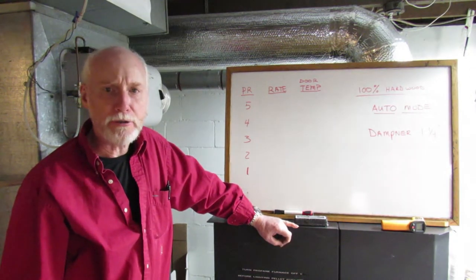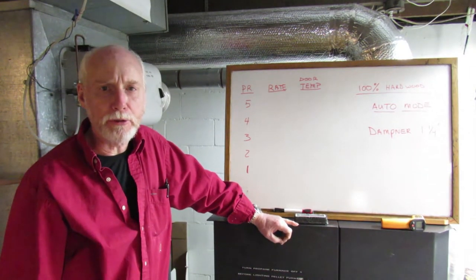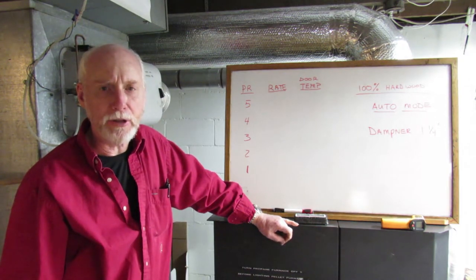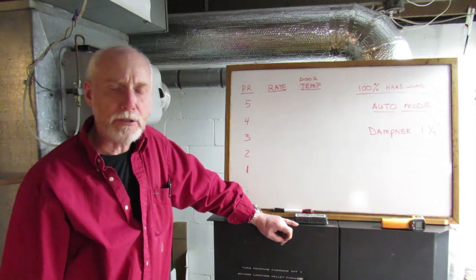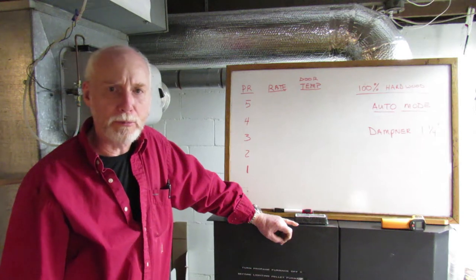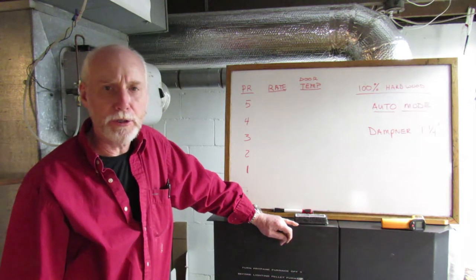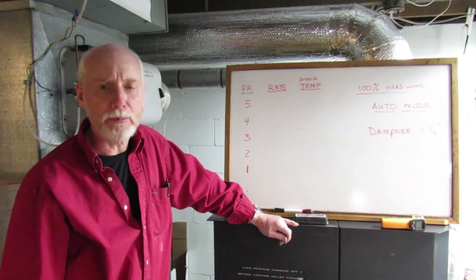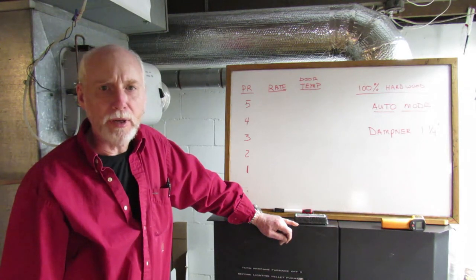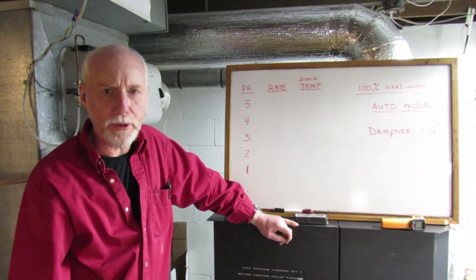I found over last year and this year that the stove runs much smoother if you eliminate, in other words don't use, setting number 5 for your high temp. And the reason for this is that your stops are set according to your computer board from your PR1 setting and your PR5 setting. So when you're running a high temp on PR5, what's happening is you're bumping up against the top stops, the limits on that computer board in there.